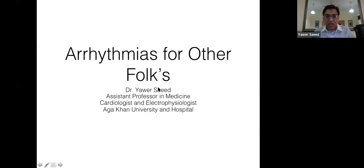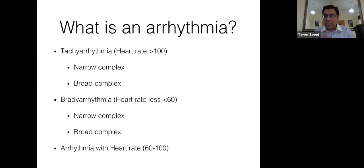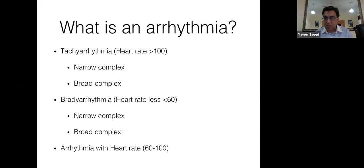What is an arrhythmia? It's important to realize that arrhythmias are not only tachyarrhythmias and bradyarrhythmias — they also occur with a normal heart rate between 60 and 100 beats per minute. When looking at arrhythmias, don't focus on reaching a diagnosis immediately. First, determine if it's a tachyarrhythmia, then decide whether it's narrow complex or broad complex.